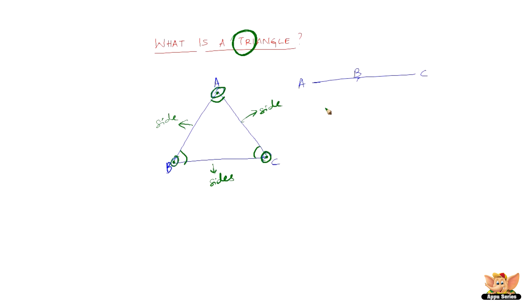And symbolically triangle is denoted like this. So if you have to say ABC, then it is triangle ABC. This is how it is denoted.